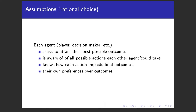There are some assumptions that are usually the same across most presentations of this, sometimes called the rational choice assumptions. For each agent or player, they're trying to attain their best possible outcome. They're aware of the possible actions other agents could take, they know how each action they take impacts the final outcomes of the game, and they also know their own preferences over these outcomes.